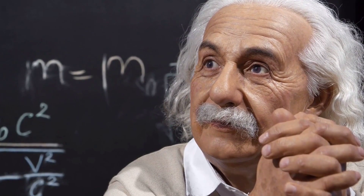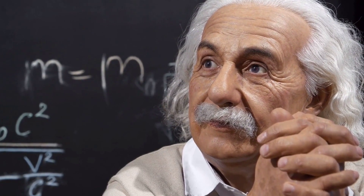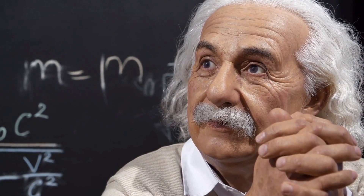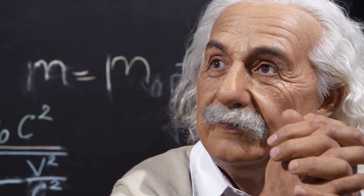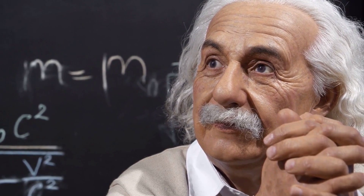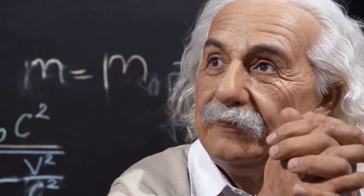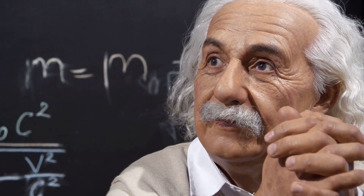Albert Einstein, a German physicist with wild hair and an unparalleled intellect, introduced this revolutionary formula at the beginning of the 20th century, challenging convention and transforming the way we see the world. His theory of special relativity, of which E equals m times c squared is a fundamental pillar, is not only a cornerstone of theoretical physics — it is a symbol of the human ability to transcend the limits of the known and touch the very essence of reality.